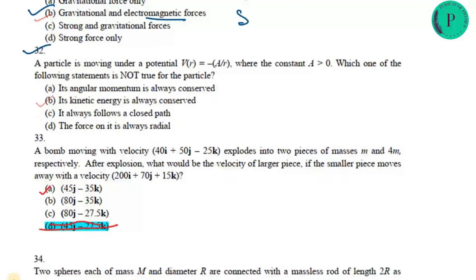Question 32 involves a particle moving under a central force with potential V = −a/r. Which statement is NOT true? Since it is a conservative force, momentum is conserved. For a central force, angular momentum is conserved — not linear momentum. The kinetic energy is not conserved at all times, so option B is the correct answer.